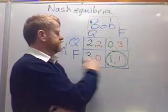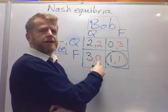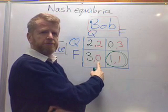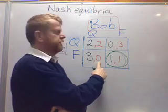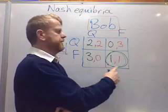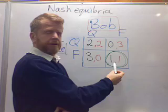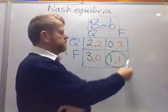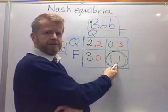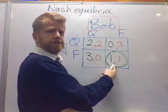If Bob changes to being quiet and Alice is still thinking, then his outcome is worse — preference zero. He always prefers Think over Quiet. So that's why this is deemed to be a solution. It's thought to be a solution of the game because if both people are playing this strategy, neither have an incentive to change.